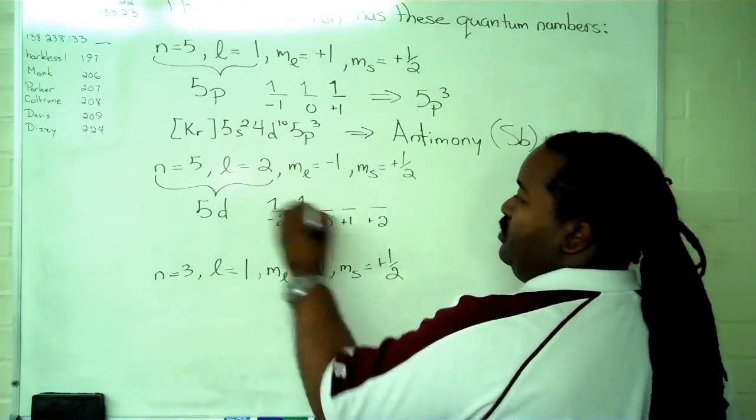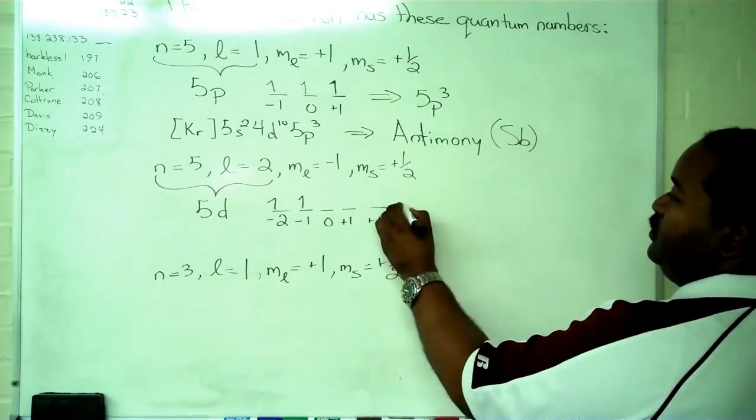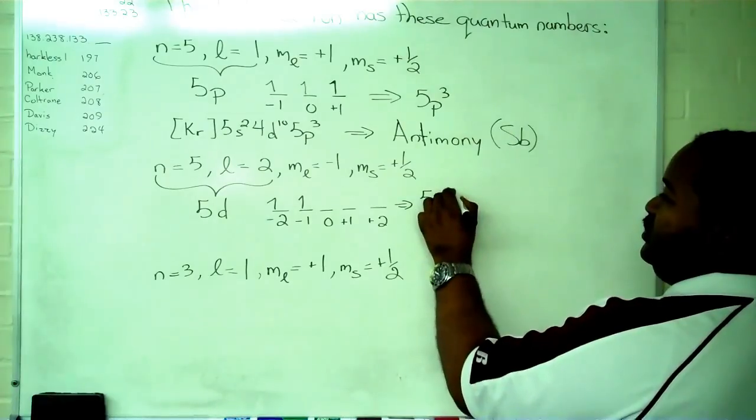We know that this one is occupied by spin up. In order to get that, we need that. So this gives me 5d2.